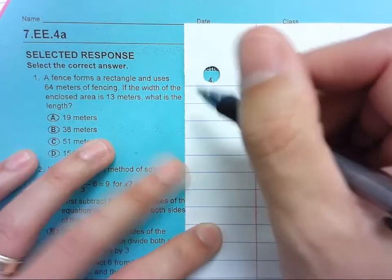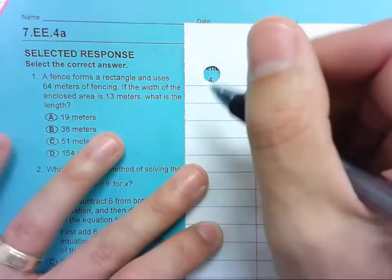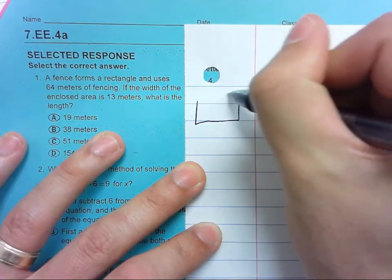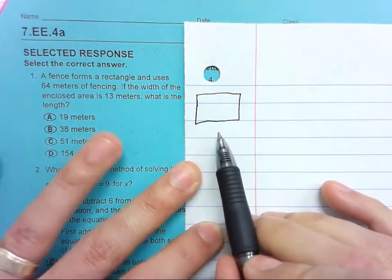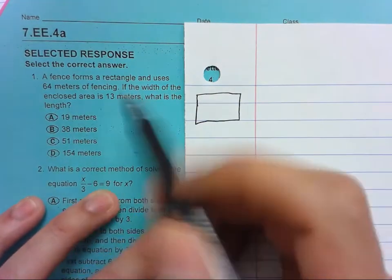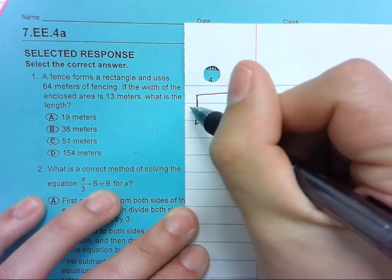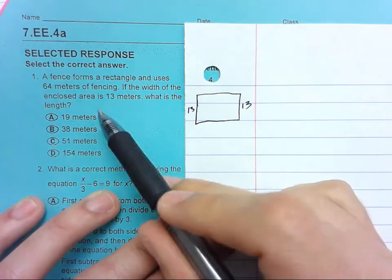Okay, so a fence forms a rectangle. So here's the fence, it forms a rectangle. If the width is 13, so this is 13, and if this side is 13, this other side is 13, what is the length?